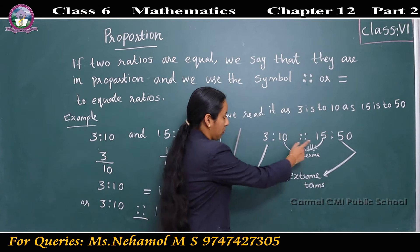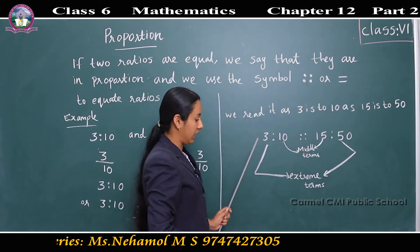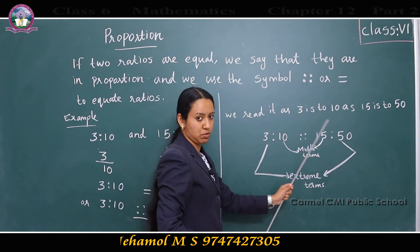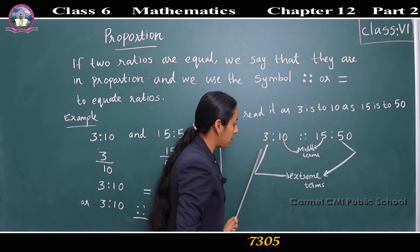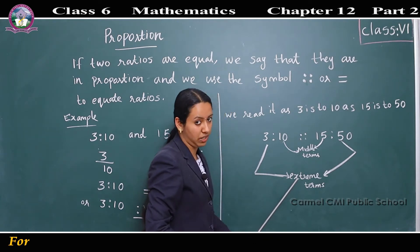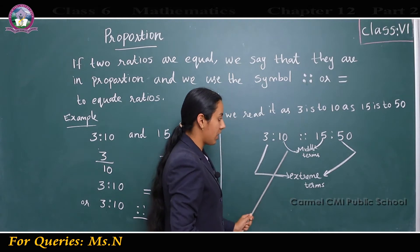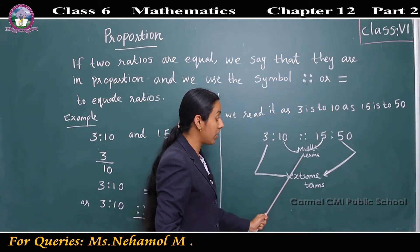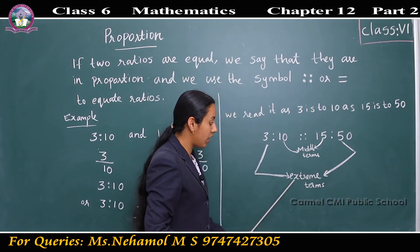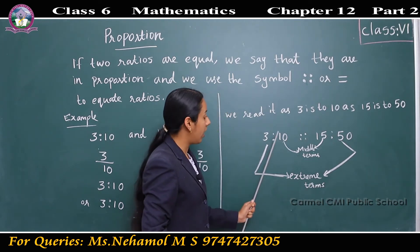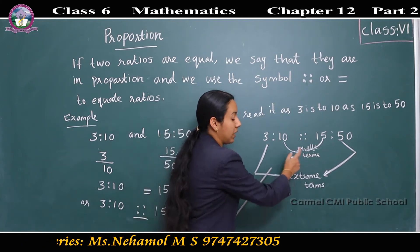In this proportional statement, there are 4 terms. These are known as terms. The first and the last terms are known as extreme terms, and the second and the third terms are known as middle terms.